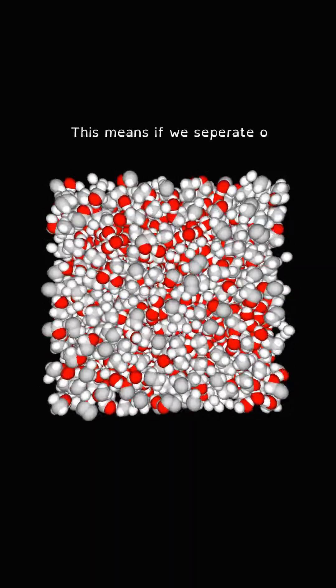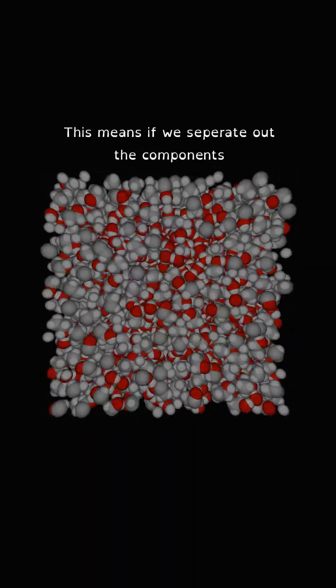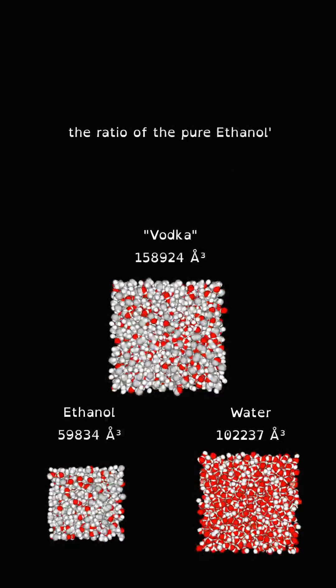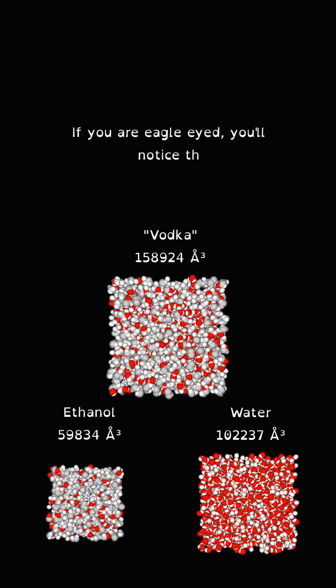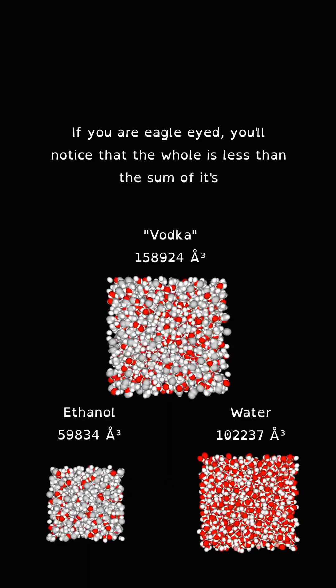This means if we separate out the components, the ratio of the pure ethanol's volume to the mixture's volume is 40%. If you are eagle-eyed you'll notice that the whole is less than the sum of its parts.